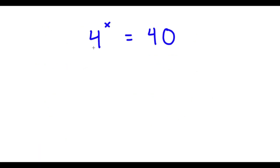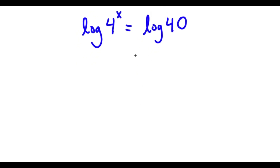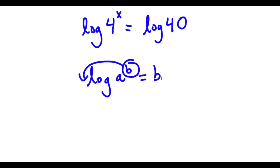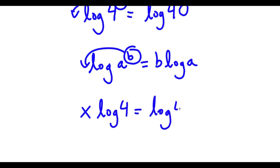In this problem, I have 4 to the power of x is equal to 40. To solve this, I'm going to take the log on both sides. So now I have log of 4 to the power of x is equal to log 40. Using the power rule, log a to the power of b equals b times log a, I can move x to the front. So now I have x times log 4 is equal to log 40.